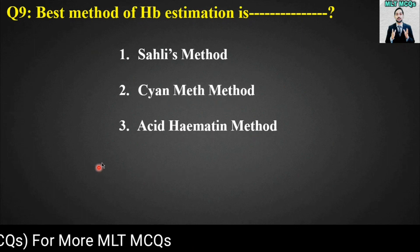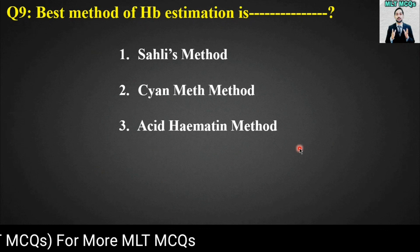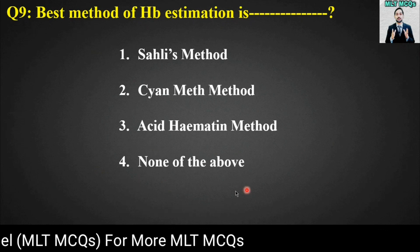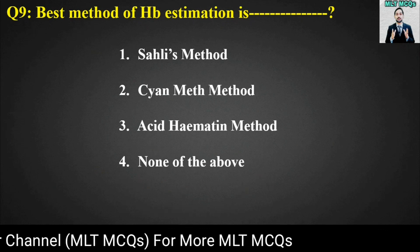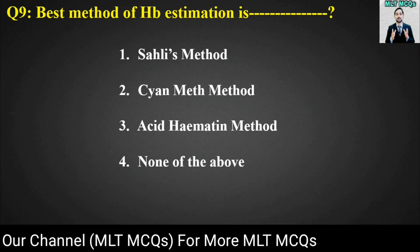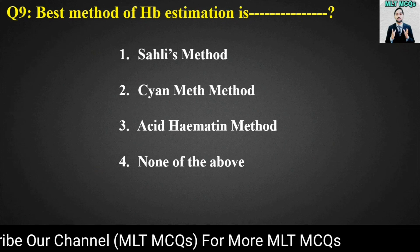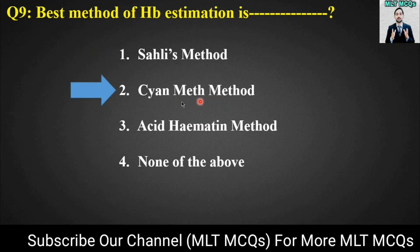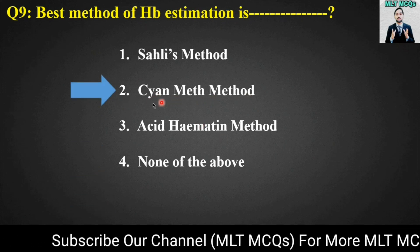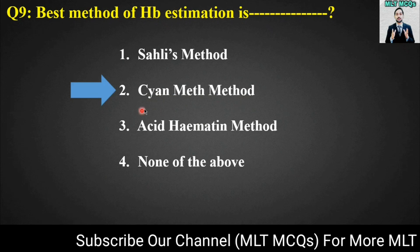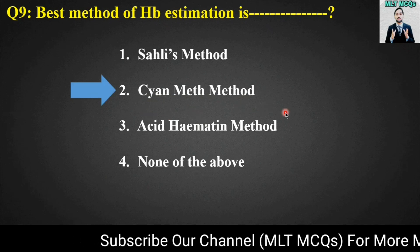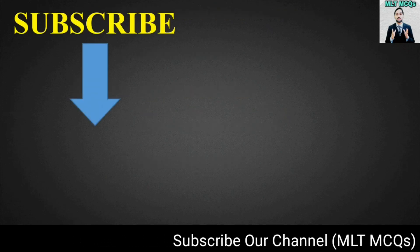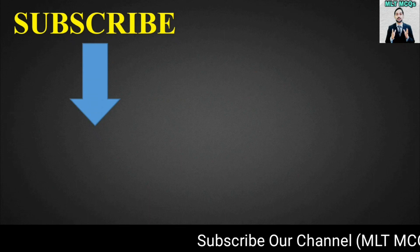Last MCQ number nine: The best method of Hb estimation is blank. Options are: Sahli's method, cyanmethemoglobin method, acid haematine method, or none of the above. The right answer is option number two — the best method of Hb estimation is the cyanmethemoglobin method.